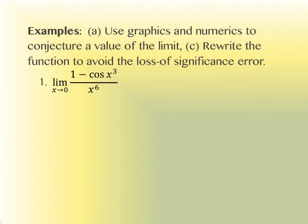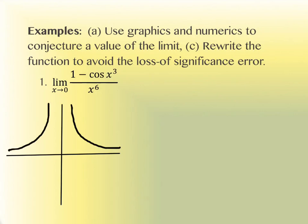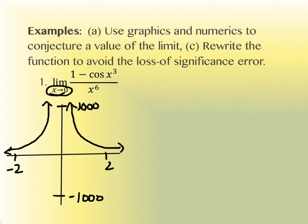Starting with a graphical point of view on this new example: if you look at the graph, the window I'm using lets y go up to about 1,000 and down to negative 1,000, while x goes from about negative 2 to positive 2. It looks like, as x approaches 0 from both directions, our conjecture might be that this is actually approaching an infinity kind of value from this picture.